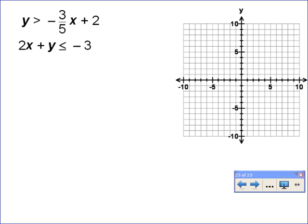We first graph this line. So the first one is the easy graph because you already have it in slope-intercept form. So your slope is negative three-fifths and your y-intercept is zero-two.